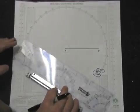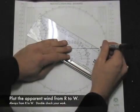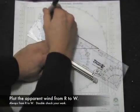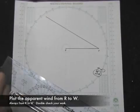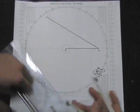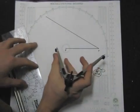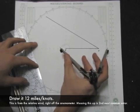So the next thing we do is take that apparent wind direction and plot outward from R to W. Always from R to W. That's a common mistake. And how long do we draw this? We draw it 12 knots. That was off the anemometer, from R to W.